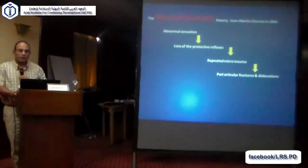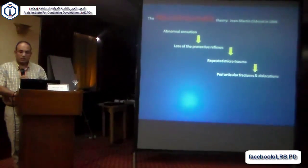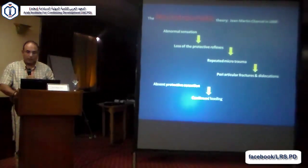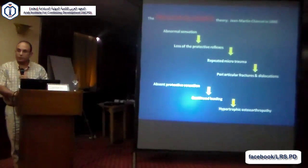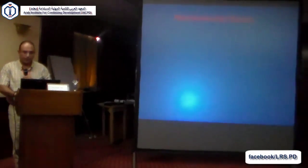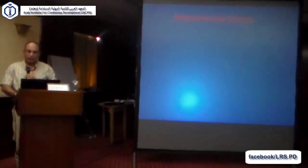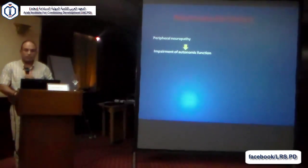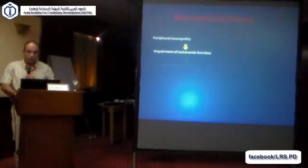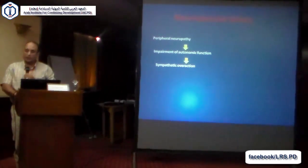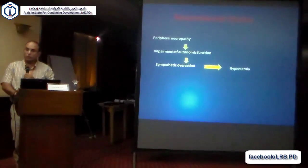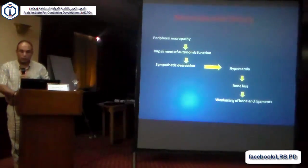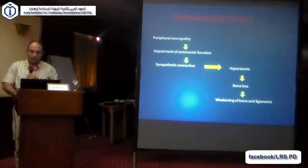Those patients, when they have fractures and dislocations, won't feel pain, so they continue to walk, and this leads to hypertrophic osteoarthropathy. In the neurovascular theory, peripheral neuropathy leads to impairment of autonomic function, and this leads to sympathetic overaction causing hyperemia, leading to osteolysis and bone loss, and weakness of the bones and fractures.